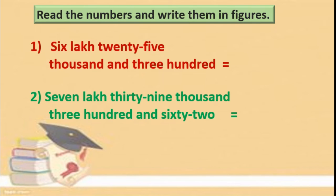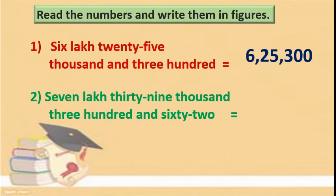Next, read the numbers and write them in figures. Here numbers are given in words and you have to write them in figures. Six lakhs twenty-five thousand and three hundred — tens and units are not there, so put zero in tens and units place: 6,25,300. Seven lakhs thirty-nine thousand three hundred and sixty-two — everything is there, easily we can write this: 7,39,362.